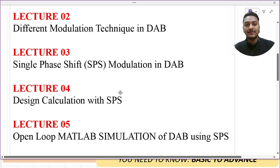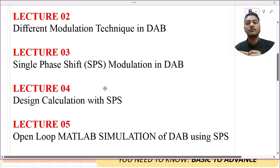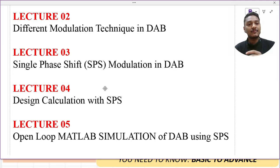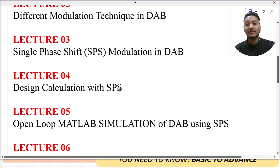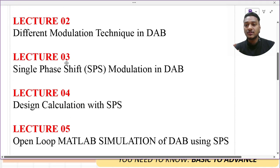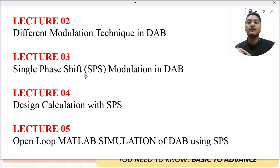Then in lecture number four we cover design calculations with single phase shift — how to select components for the DAB converter. For MATLAB simulation, we need to design the value of L and C and everything else. This lecture serves as the foundation for other modulation techniques: once we understand single phase shift, the same procedure applies to dual phase shift and other techniques.